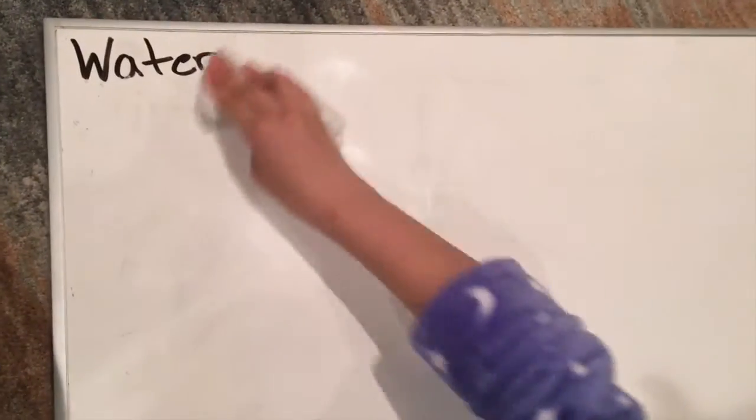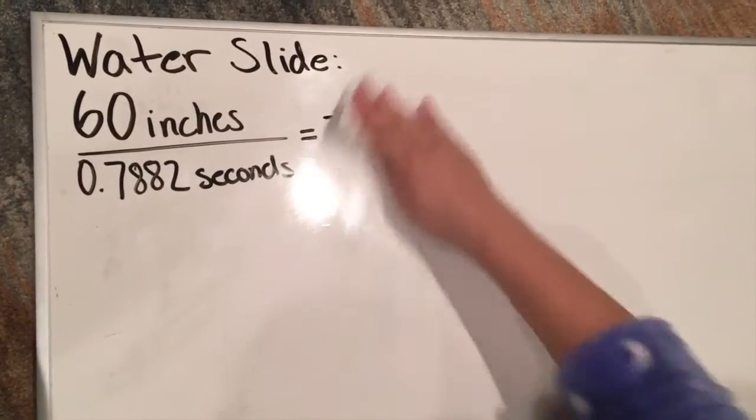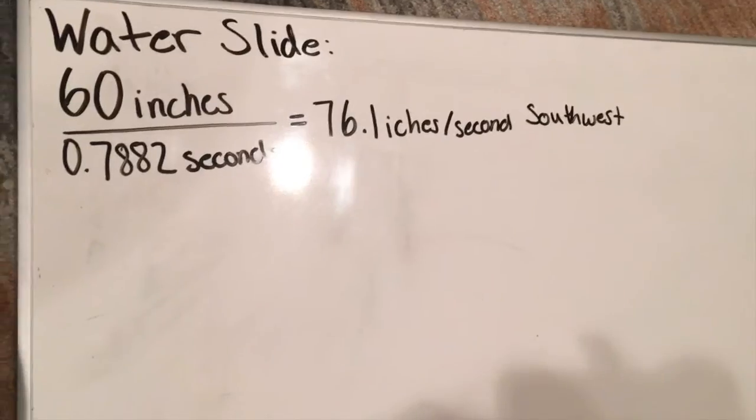For the water slide, it is 60 divided by 0.7882, which is equal to 76.1 inches per second southwest.